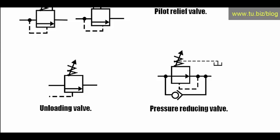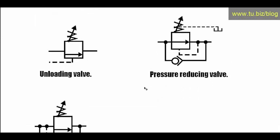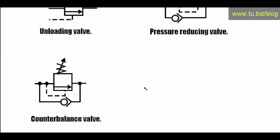Next is the counterbalance valve, which is very similar to the relief valve but it has a check valve. This allows flow in both directions — in one direction it has the pressure setting, and in the other direction the flow goes freely through the check valve.